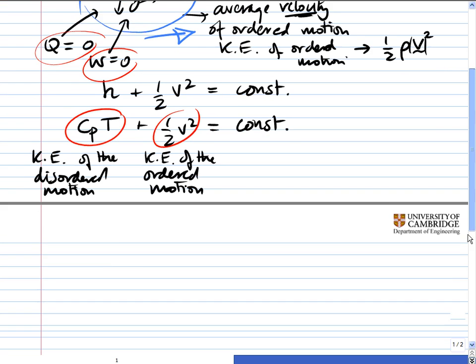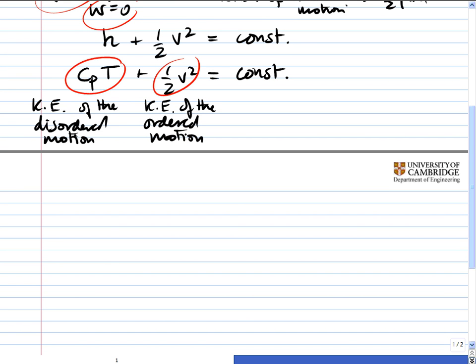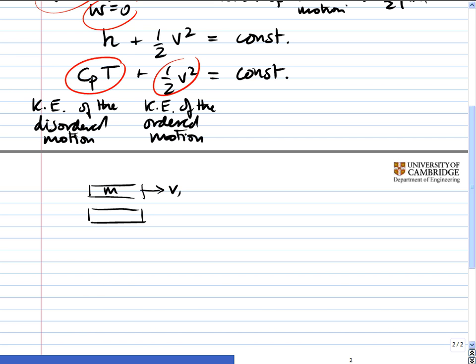So let's imagine two layers of fluid. One of them going at velocity v₁ with mass m, and the other one going with velocity v₂, again, with mass m.